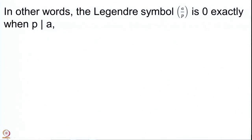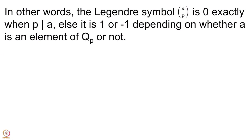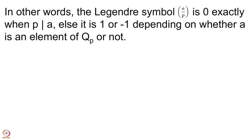This is the understanding of the Legendre symbol. In other words, the symbol (A/P) is 0 exactly when P divides A, else it is 1 or −1 depending on whether A is an element of Q_P or not. Whenever A is a square modulo P the Legendre symbol is 1; whenever A is not a square modulo P the Legendre symbol is −1.